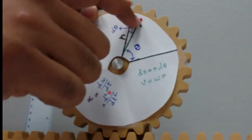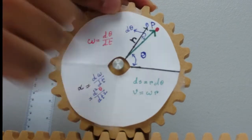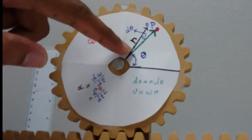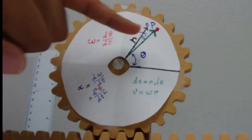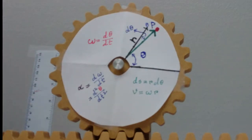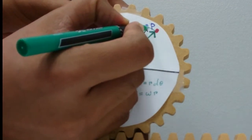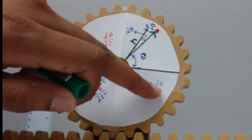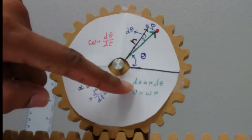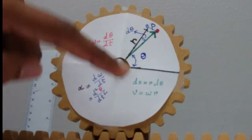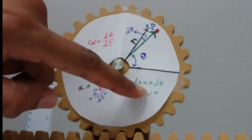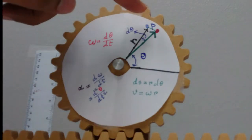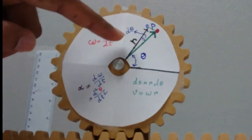Any small displacement of point P along the circular path can be defined by the geometric rule that arc length equals radius multiplied by angle. So a small displacement ds equals r times d theta. If we take the first derivative with respect to time, we get the velocity of P, which equals r times d theta over dt — and since d theta over dt is omega, the velocity of P is r times omega.